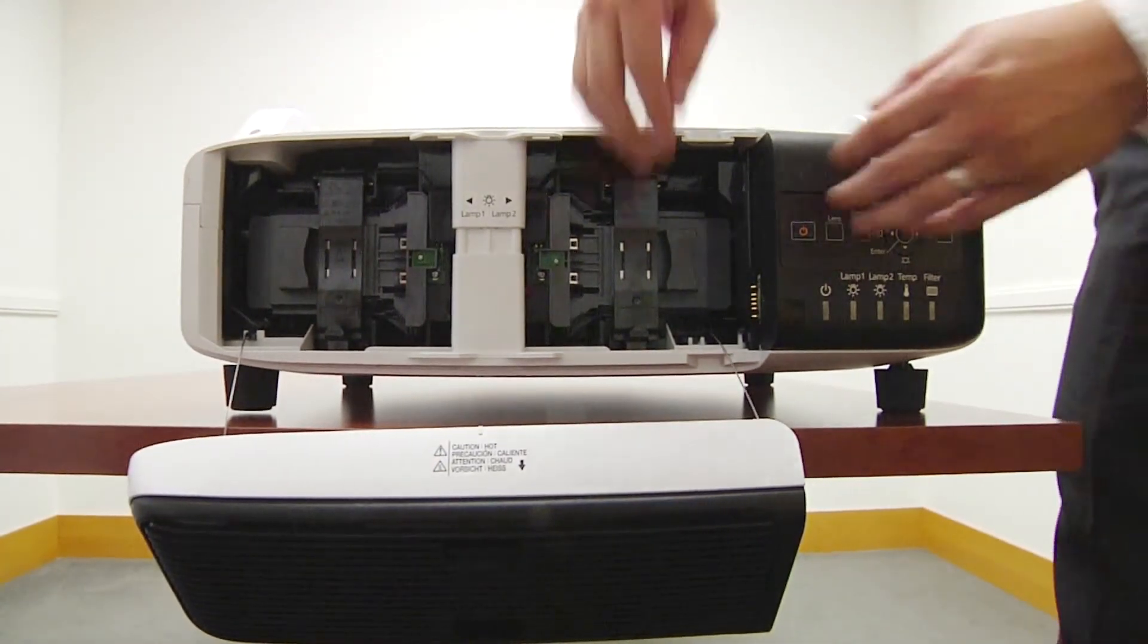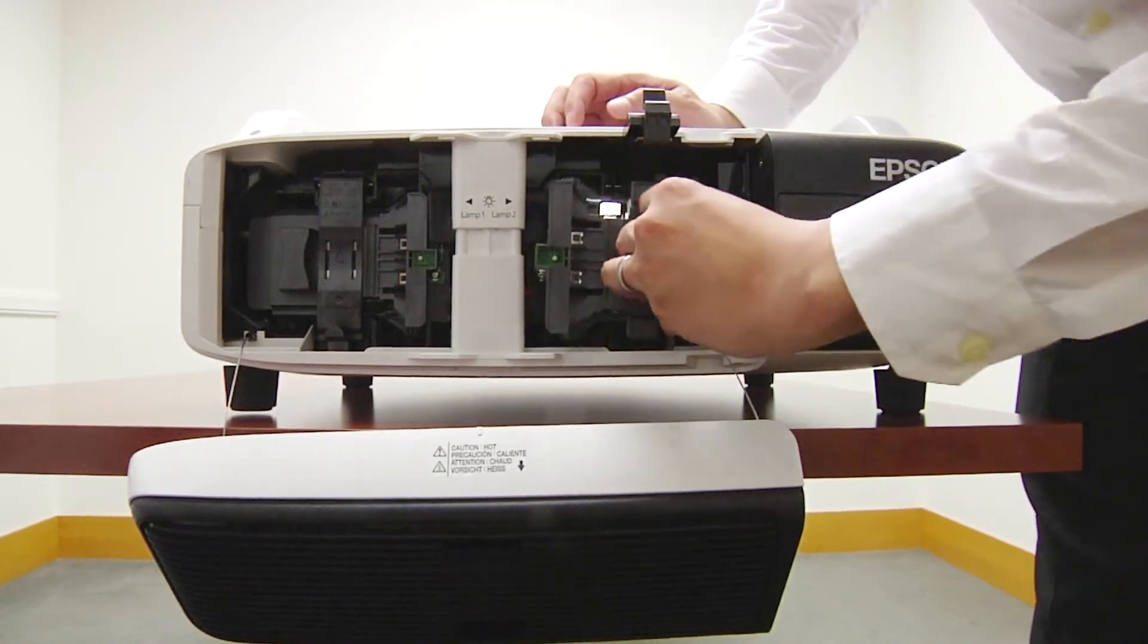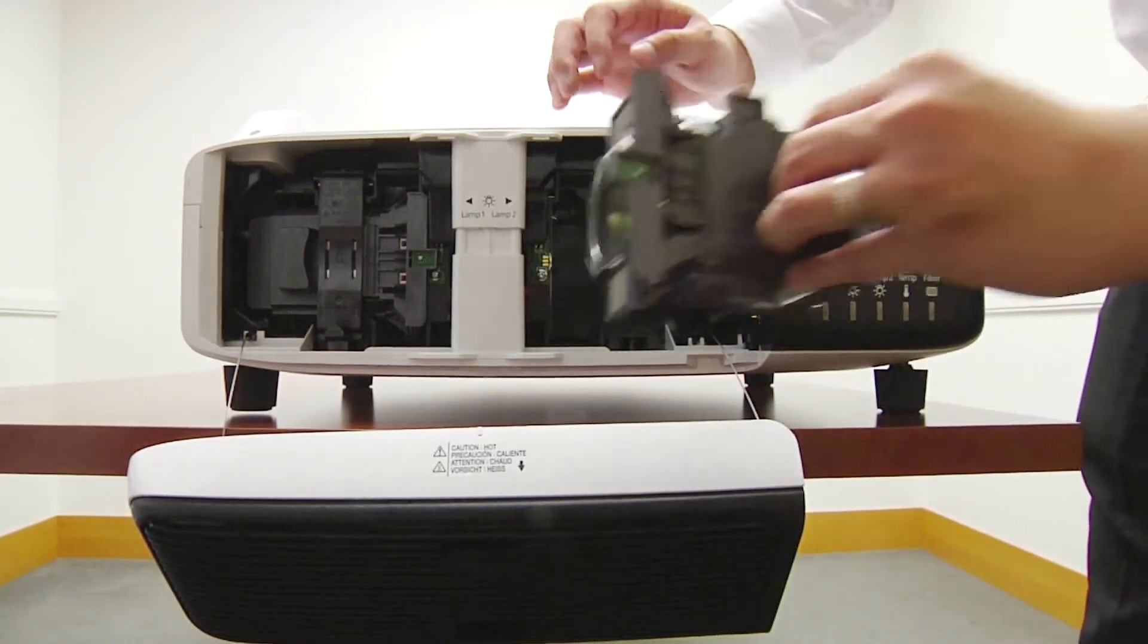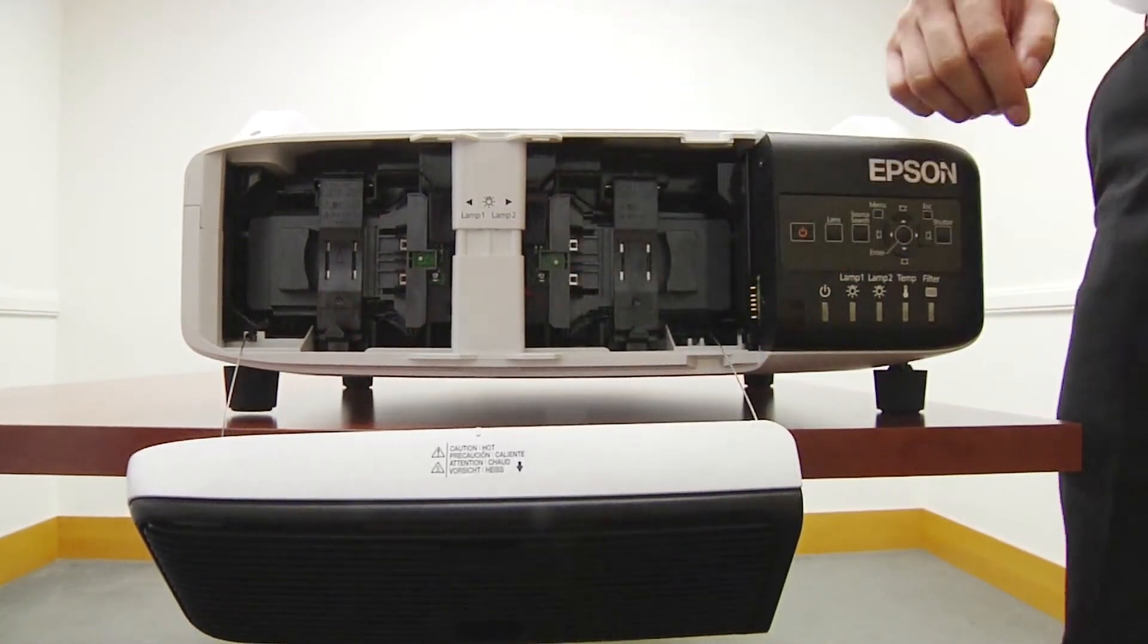To replace Lamp 2, same procedure. Pull up on the clamp, slide the lamp out, replace it with the new lamp, and clamp the lamp shut.